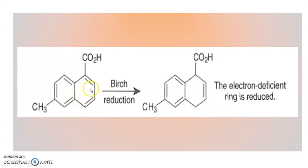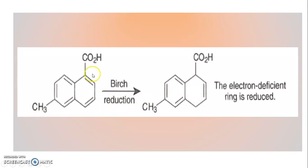Here, in this case, there are two rings. One ring has a carboxylic acid group attached, and the other ring has a COOH group attached. The ring carrying the carboxylate acid group is preferentially reduced.